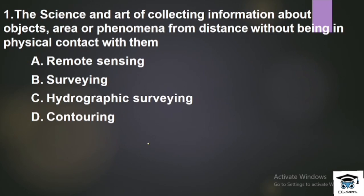The science and art of collecting information about objects, area or phenomena from a distance without being in physical contact with them. That phrase — without being in physical contact — is very important for the exam. We have options: remote sensing, hydrographic surveying, and contouring. What is the answer? Remote sensing.